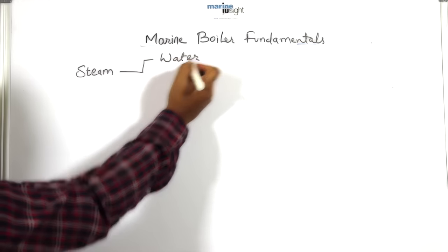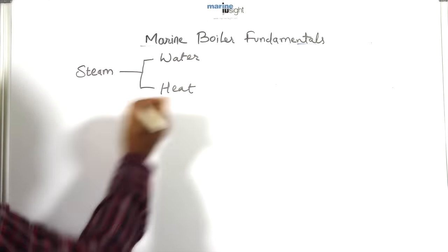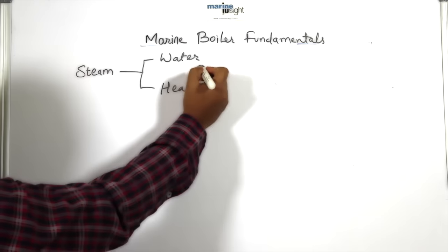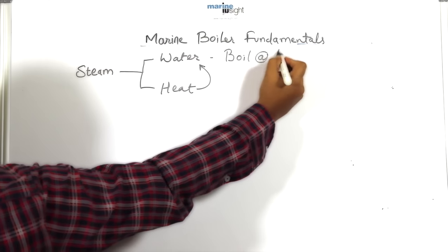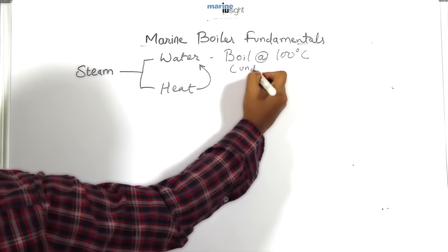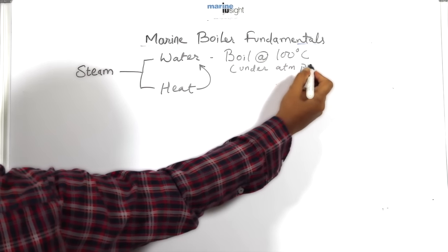To produce steam, we require two basic components: water and heat source. When we supply correct quality and quantity of heat to water inside the boiler, it will boil at 100 degrees Celsius under atmospheric pressure.